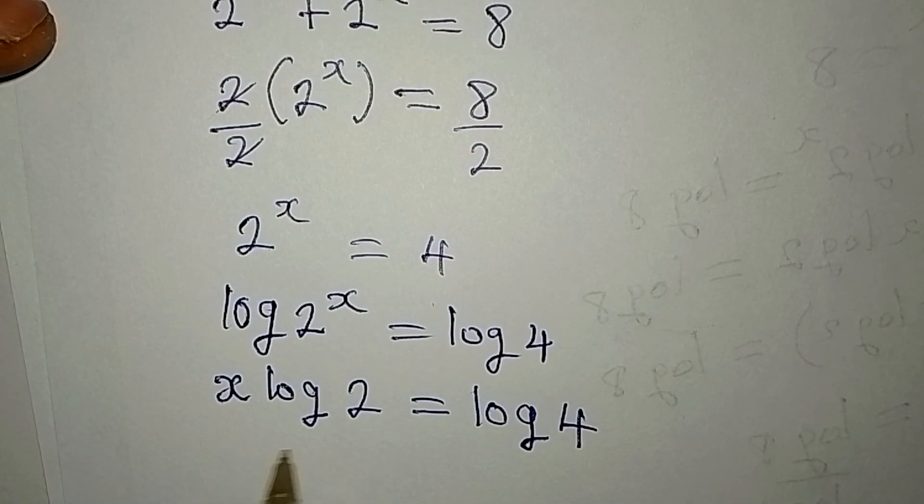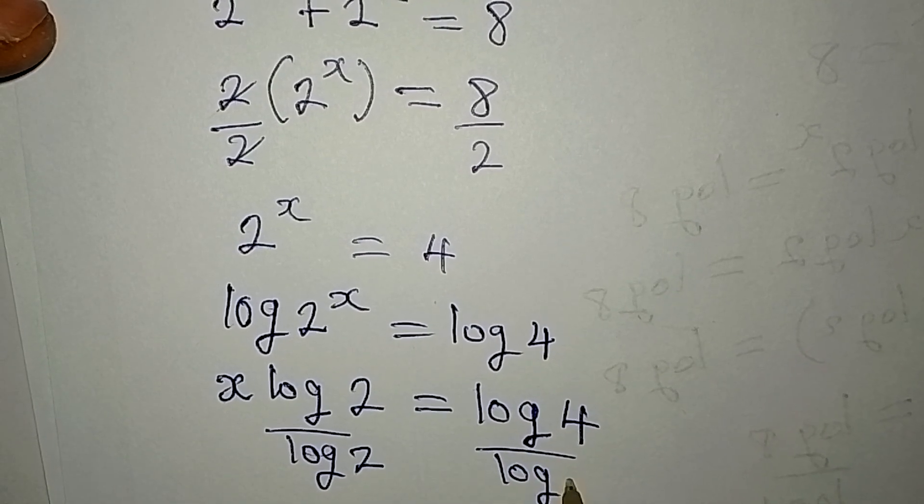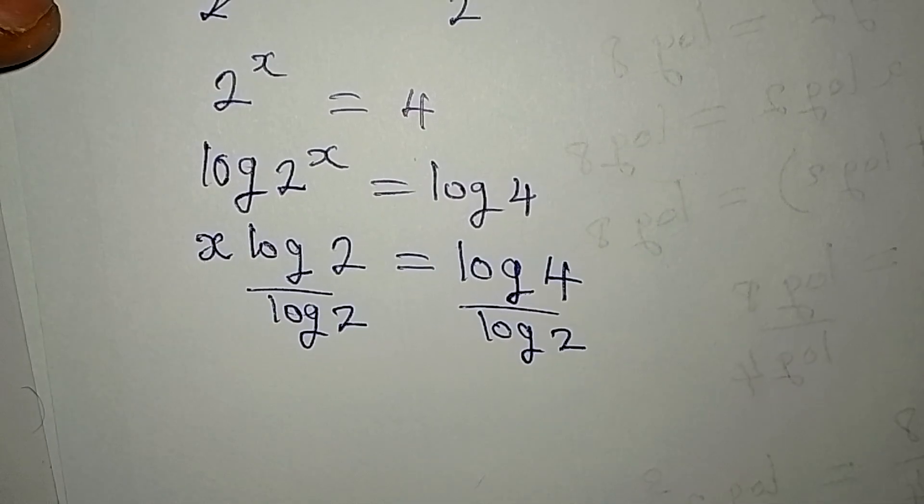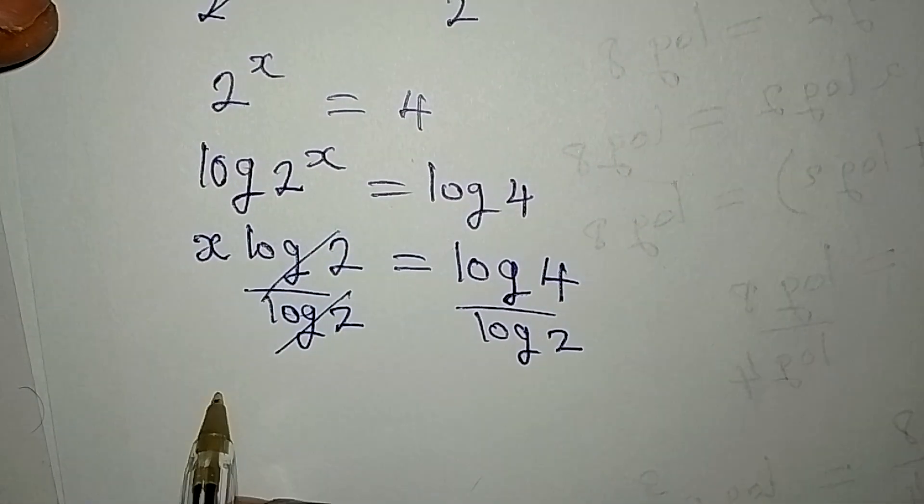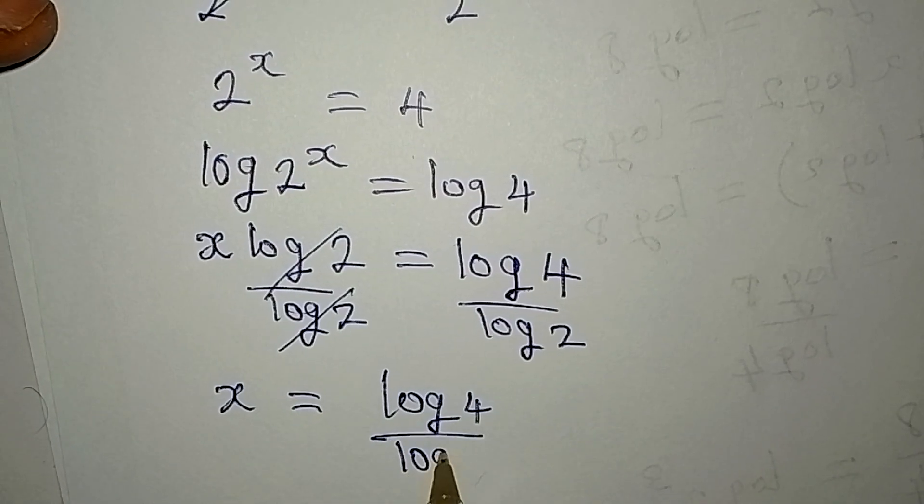Now we can divide both sides by log 2 so that x will be alone. This is going to cancel, and x is equal to log 4 over log 2.